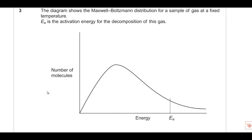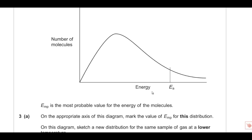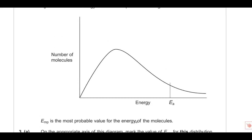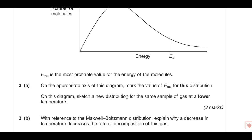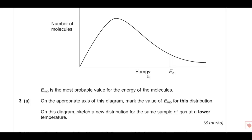Question 3 is about kinetics - quite nice easy questions. On the Maxwell-Boltzmann distribution, mark the most probable energy EMP on the x-axis (energy axis). The most probable energy is at the peak of the curve. Draw a vertical line down from the peak to mark EMP on the energy axis - that's one mark.